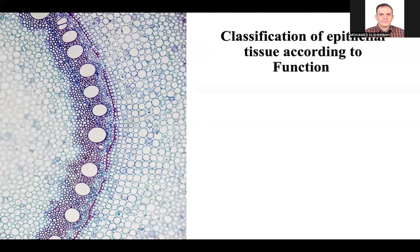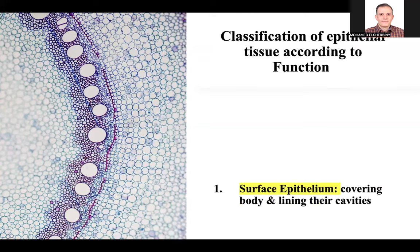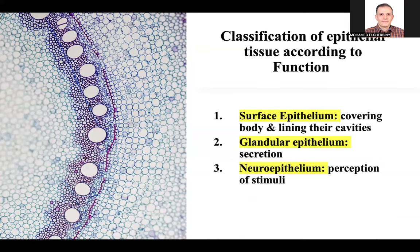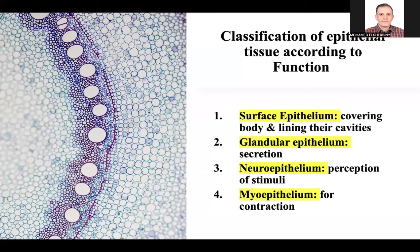We classify epithelial tissue. As we said, we have four types of tissue in our body: epithelium, connective tissue, muscle, and nervous tissue. According to function, we divide epithelial tissue into surface epithelium, which lines the surface of the body and cavities like the GIT; glandular epithelium, responsible for secretion; neuroepithelium, important for receiving stimuli; and myoepithelium, which is important for contraction.